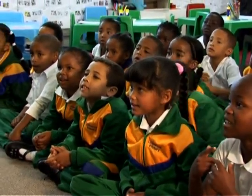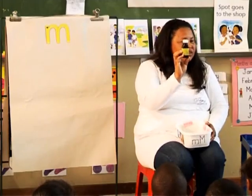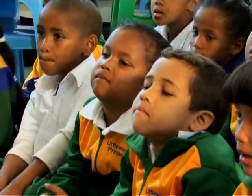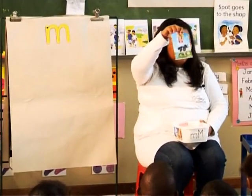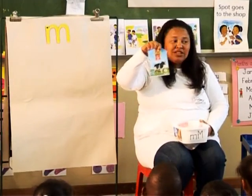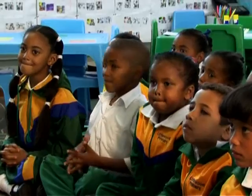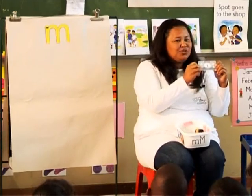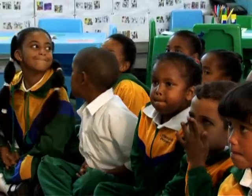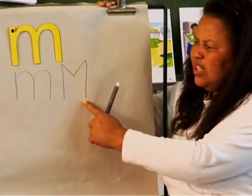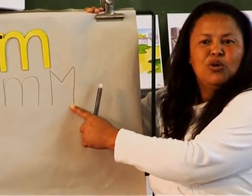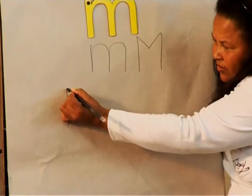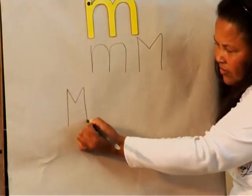Next we use the letterbox to revise the sound for the week. What is this? Medicine. And this starts with a M. What is this? Milk. And what sound does milk start with? What is this? Money. And what does this start with? M. After using the letterbox, I ask the learners what starts with the letter M. And as soon as they give me a word starting with the letter M, I will write it down, and this way we make up a list.